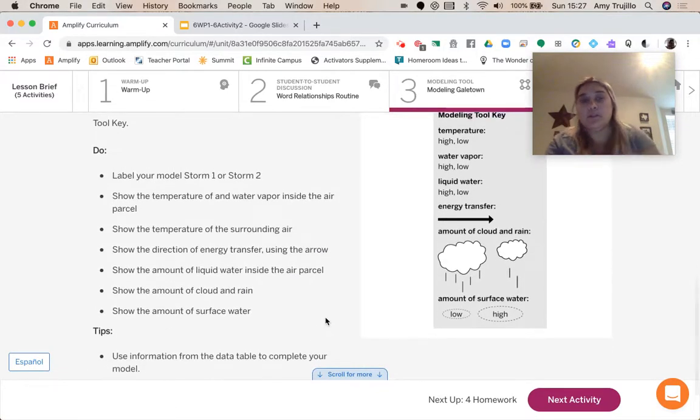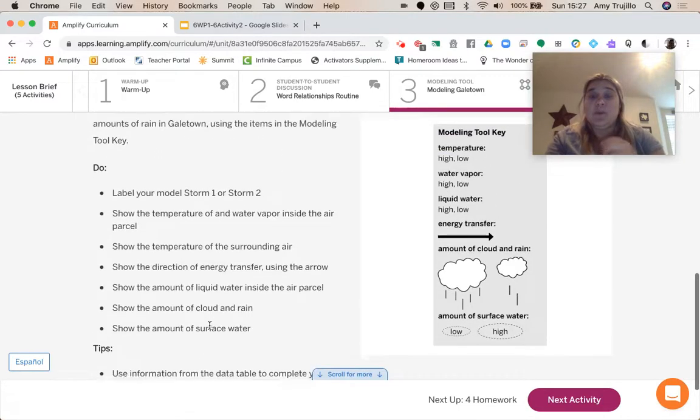So we're going to model, we're going to label our models to show the temperature and water vapor inside the air parcel, show the temperature of the surrounding air, show the direction of energy transfer using the arrow, show the amount of liquid, show the amount of rain, surface water, all these things.